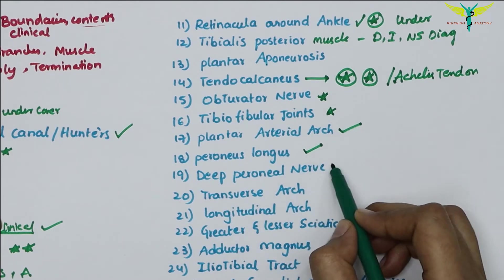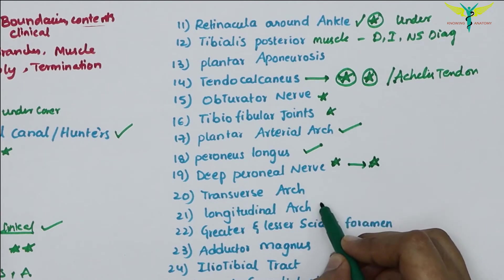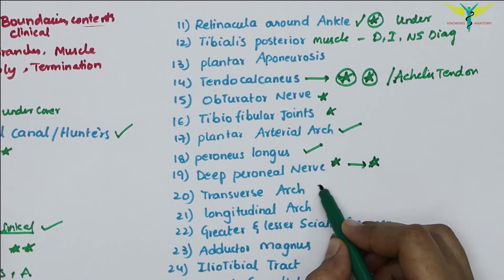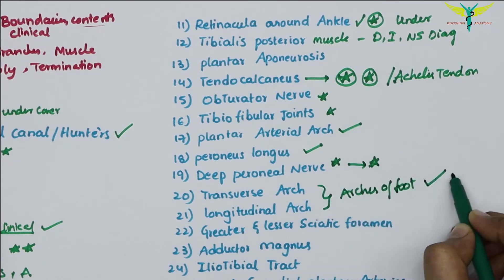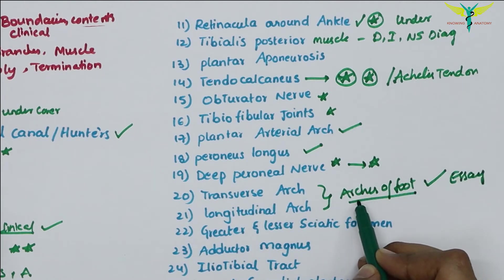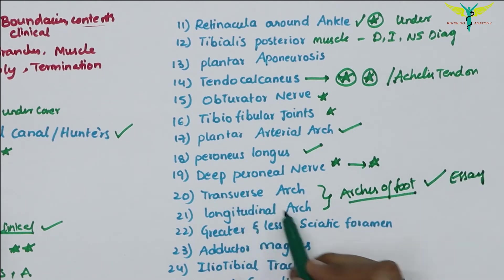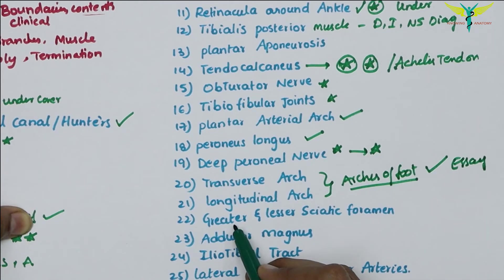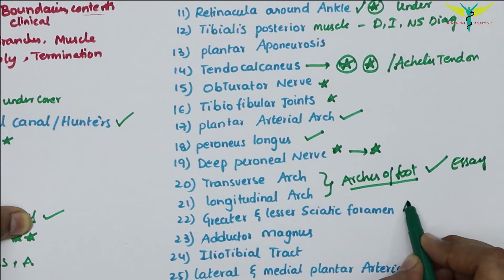The peroneus longus muscle is important — its origin, insertion, and action. The deep peroneal nerve is very important. The transverse arch and the longitudinal arch — the two arches of the foot — can be asked as four-mark questions.